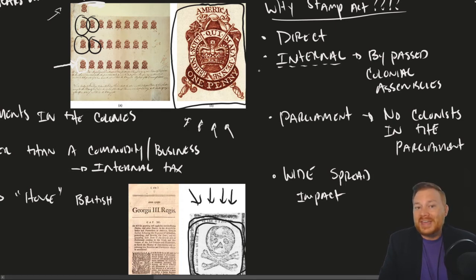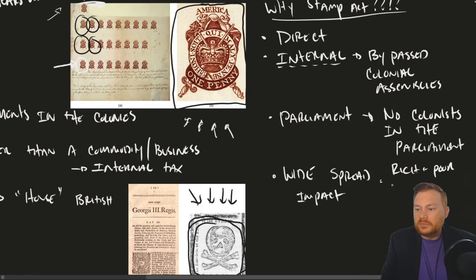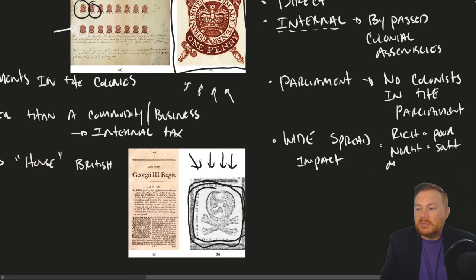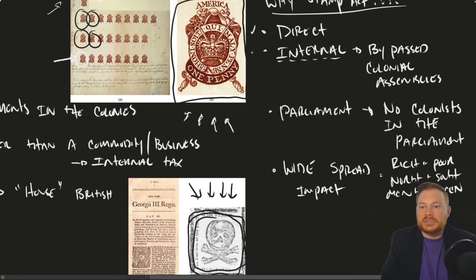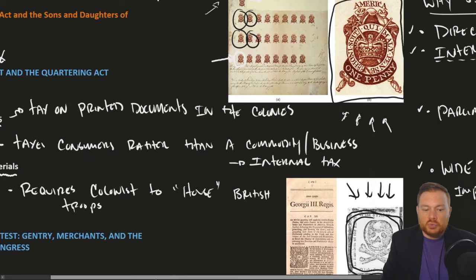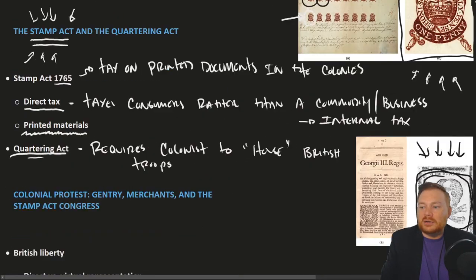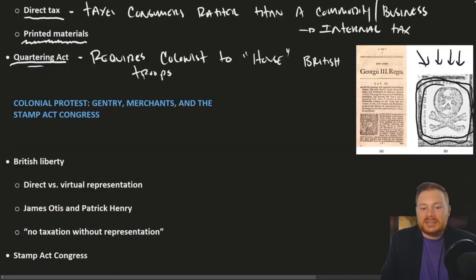It impacted both North and South, rich and poor, men and women. Because everyone felt the impact of the Stamp Act, that created a much bigger response to it. So it was a direct tax, it was internal, it was passed by Parliament which had no colonial representation, and it had a widespread impact. So what did the colonists do in response to Great Britain passing this tax?